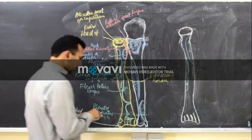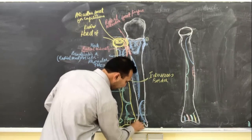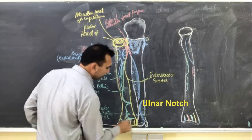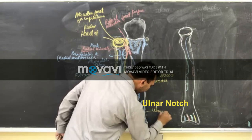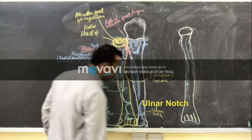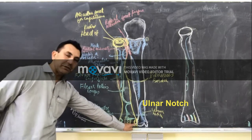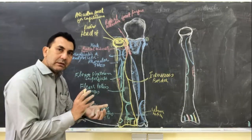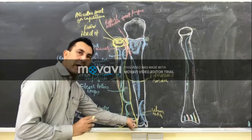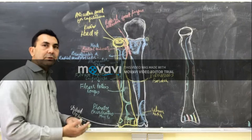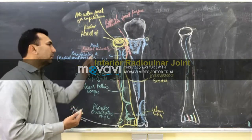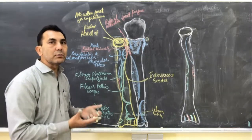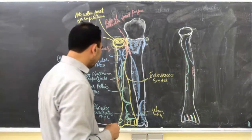At the lateral side of the distal end is a projection called the styloid process of the radius. On the medial side of the distal end is a notch called the ulnar notch. The head of the ulna comes and joins at the ulnar notch to form the inferior radio-ulnar joint. Both the superior and inferior radio-ulnar joints allow pronation and supination movements between the two forearm bones.